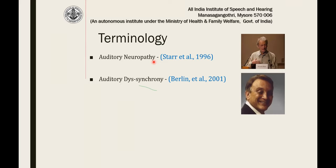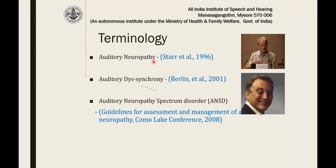What we use commonly now is the terminology decided at a conference in Italy in 2008, where they came up with the idea that it should be called a spectrum disorder — similar to autism spectrum disorder — because it's not restricted only to the nerve; it can be in the IHC or the synapse. It is more like a spectrum, not a specific neural disorder. The now well-accepted terminology is auditory neuropathy spectrum disorder.